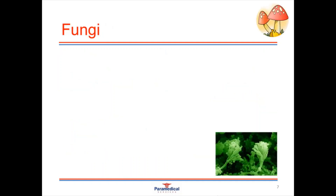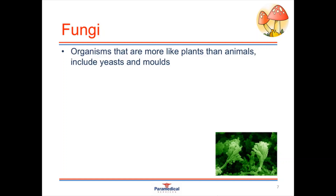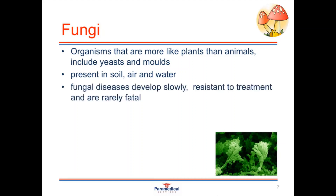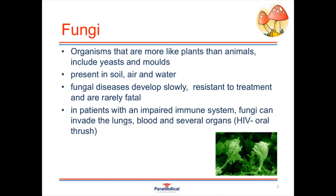Fungi are a different type of infectious agent, different in shape, structure and nature to viruses and bacteria. Fungi are organisms more like plants than animals, and include yeasts and molds. They can be present in soil, air and water, and are happy living independently of any human or animal host. When they do come into contact with a host, fungi are pathogens that cause a slow development of disease — usually more mildly irritating than fatal. However, in patients with very low or impaired immune systems, such as HIV patients, fungi can invade the lungs, blood and several organs with quite detrimental effects.